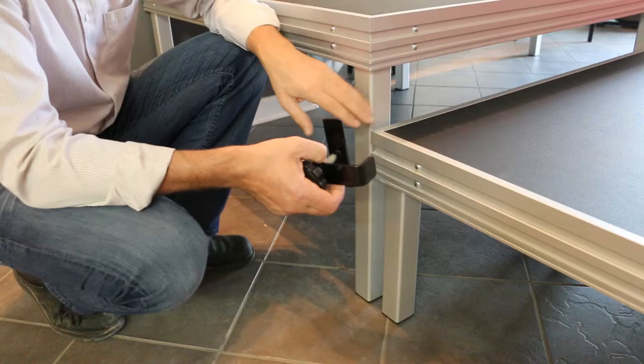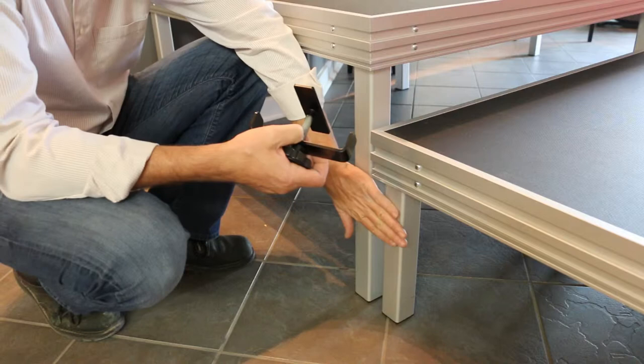you're going to need to join these platforms with a clamp and that clamp is called a leg to leg clamp. So we're actually going to secure the two platforms together by hooking a clamp from this leg to this leg.